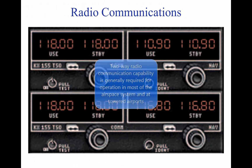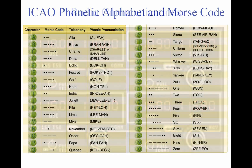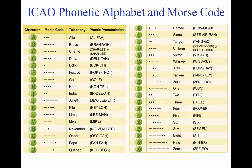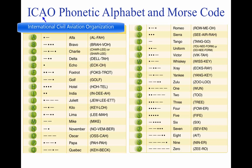Radio communications. Operating in and out of a towered airport, as well as in a good portion of the airspace system, requires that an aircraft have two-way radio communication capability. For this reason, a pilot should be knowledgeable of radio station license requirements and radio communications equipment and procedures. Using proper radio phraseology and procedures contributes to a pilot's ability to operate safely and efficiently in the airspace system. A review of the pilot controller glossary contained in the AIM assists a pilot in the use and understanding of standard terminology. The AIM also contains many examples of radio communications. ICAO has adopted a phonetic alphabet, which should be used in radio communications. When communicating with ATC, pilots should use this alphabet to identify their aircraft.